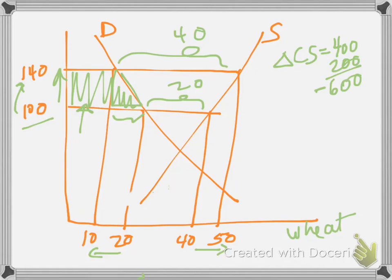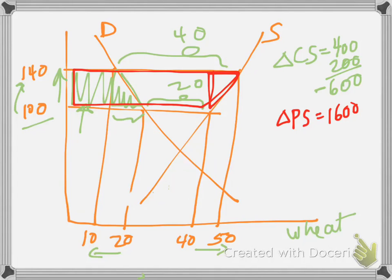Then we have the increase in producer surplus. So the producer surplus increases all this area here, and that's composed of this rectangle, 40 times 40 is 1,600. And then this triangle is 10 times 40 divided by 2, so that's 200. So producer surplus increases by 1,800. Part of that producer surplus is just the export subsidy.